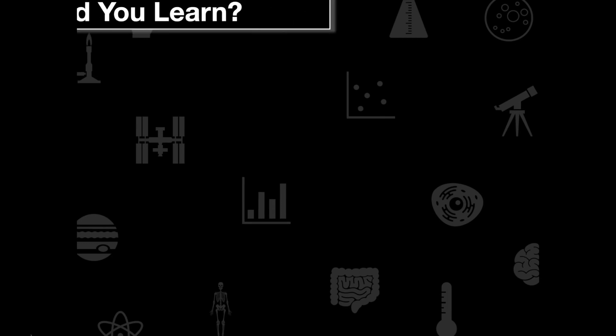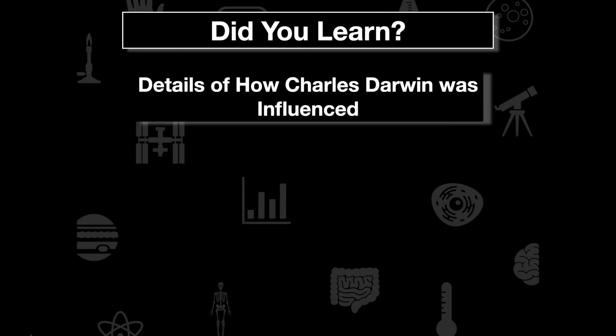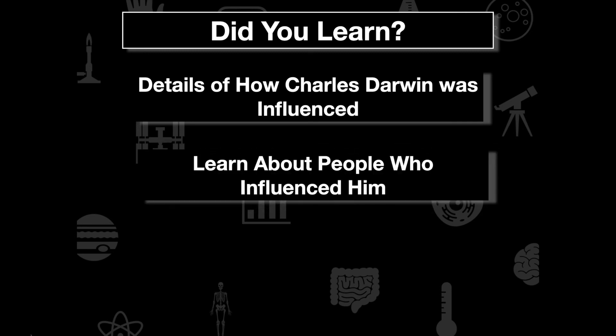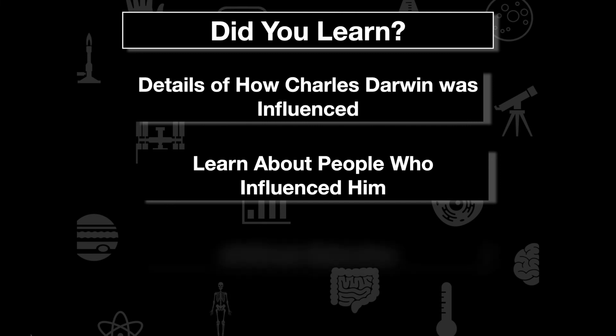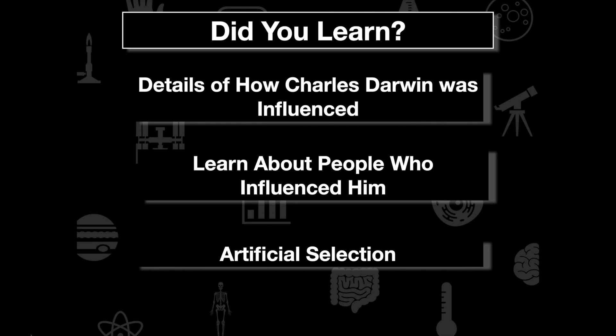To summarize what we learned: we covered in detail how Charles Darwin was influenced, the people who influenced him and the scientific discoveries they made, and the process of artificial selection. This is the end of the video — I will see you all in class tomorrow.